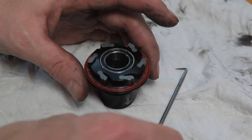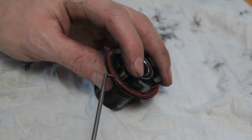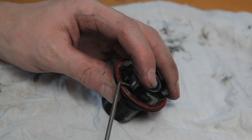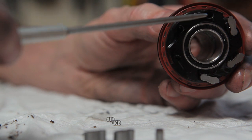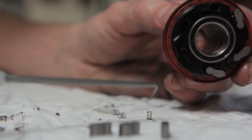To clean the drive mechanism, start by removing all six pawls and springs. You'll want to do this over a rag. A pick makes removing the pawls and springs easy.